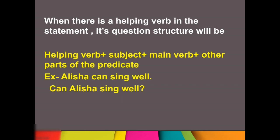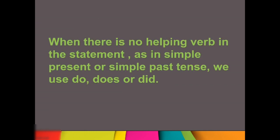How we will form the question? Sab se pehle helping verb — Can, then subject — Alisha, main verb — Sing, rest of the sentence — Well, and then question mark. Jabhi bhi helping verb aayega hamare statement mein: first of all we will put helping verb, then subject, main verb, and then rest of the sentence, and then question mark. This is how we will form a question when we are having helping verb.